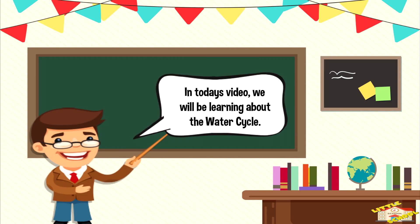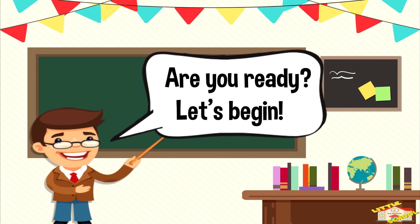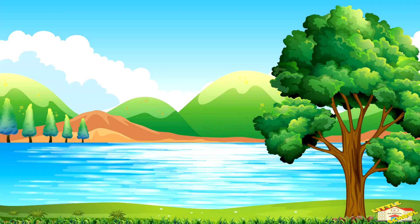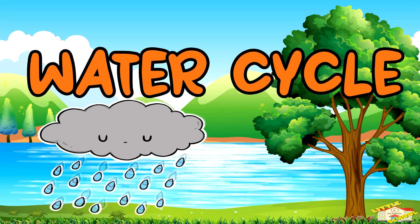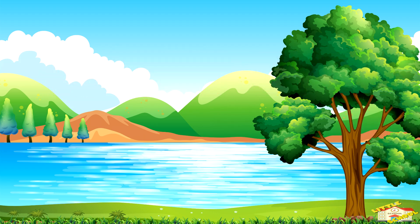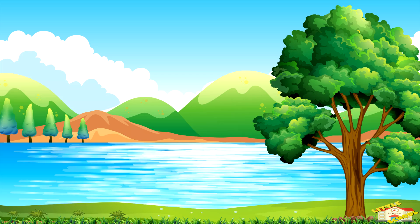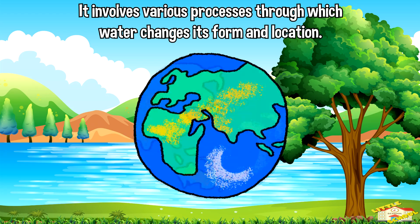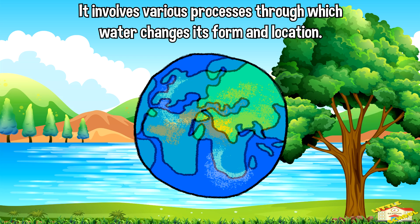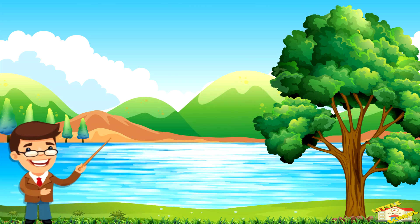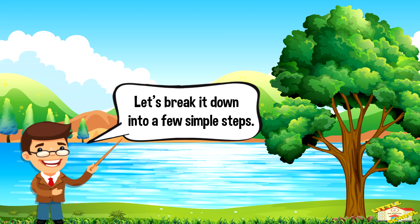Hey kids, in today's video we'll be learning about the water cycle. Are you ready? Let's begin. The water cycle, also known as the hydrological cycle, is the continuous movement of water on Earth. It involves various processes through which water changes its form and location. Let's break it down into a few simple steps.